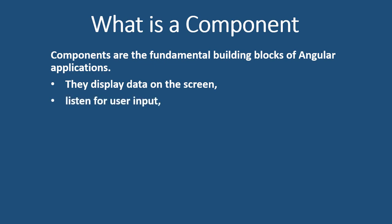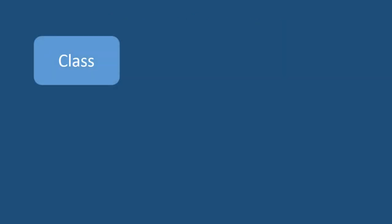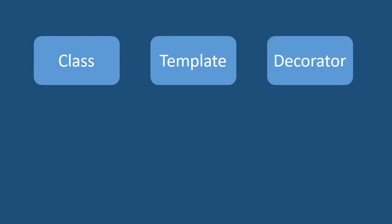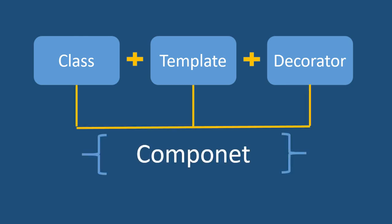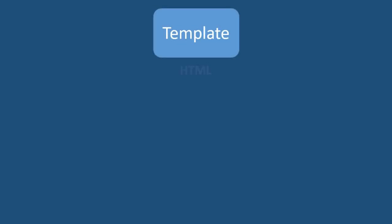Components display data on the screen, listen for user input, and take action based on that input. A component is nothing but a class with a view template and a decorator. In simple words, a component is composed of three things: template, class, and decorator. The template defines the user interface, and for building a template we use HTML, Angular directives, and data binding.